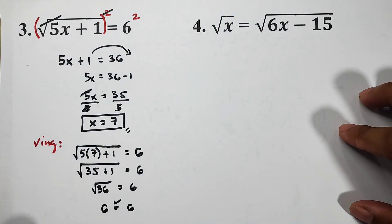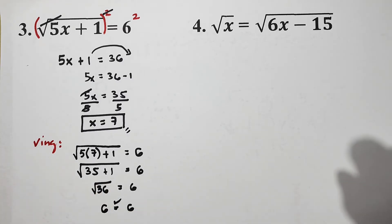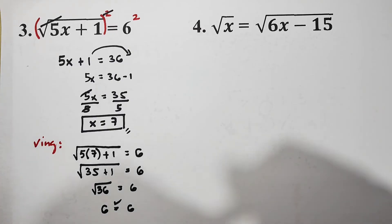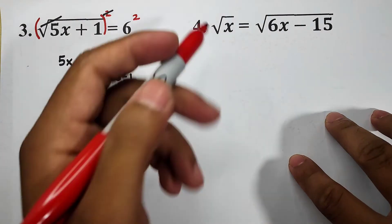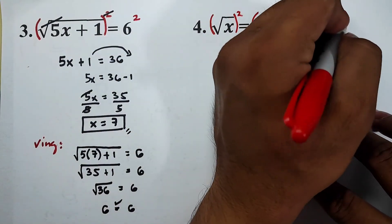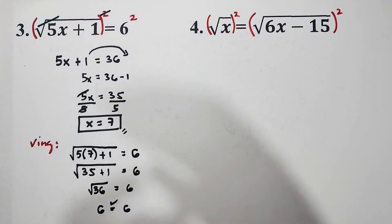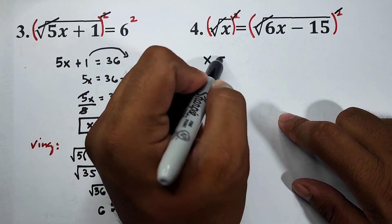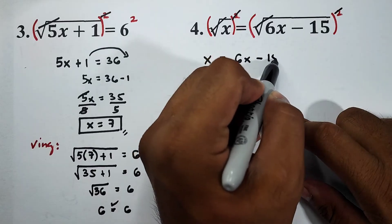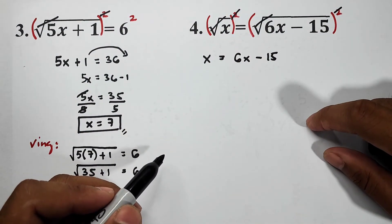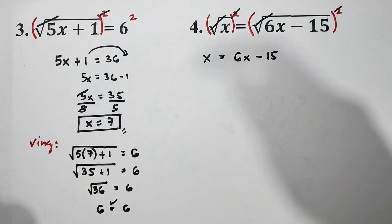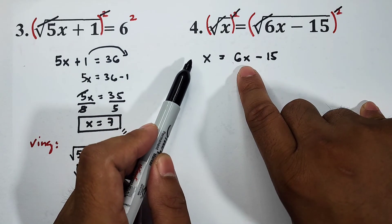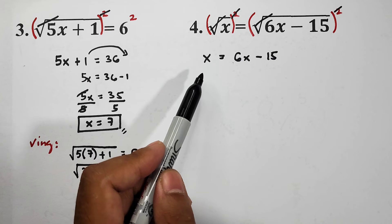Let's move on with number four. Number four has radicals on both sides of the equation: square root of x is equal to the square root of 6x minus 15. What we need to do is eliminate the radicals by squaring both sides of the equation. This eliminates both radical signs, giving us x is equal to 6x minus 15. There are two possibilities for transposition.